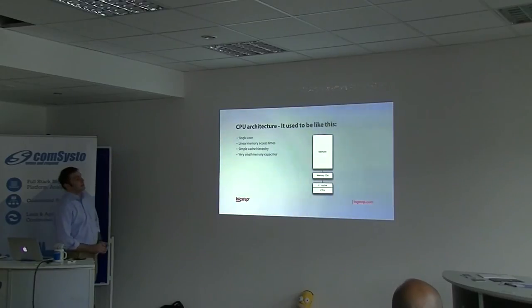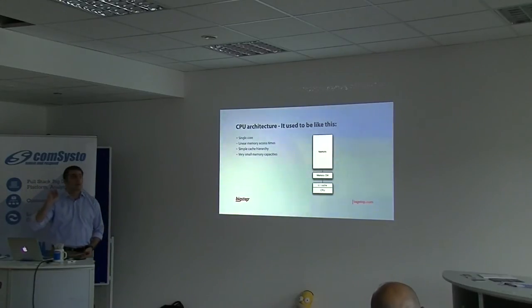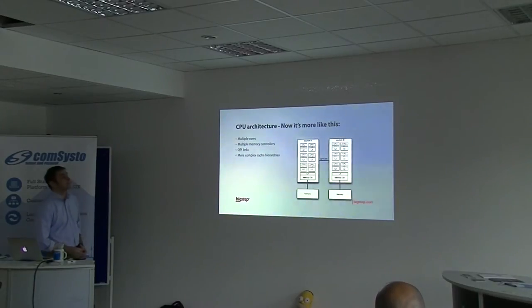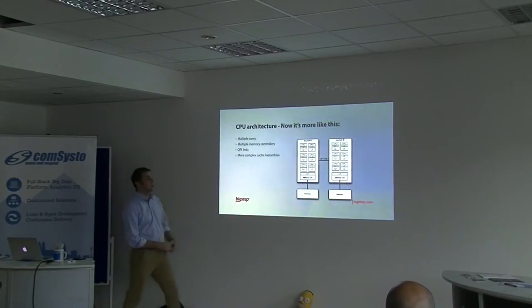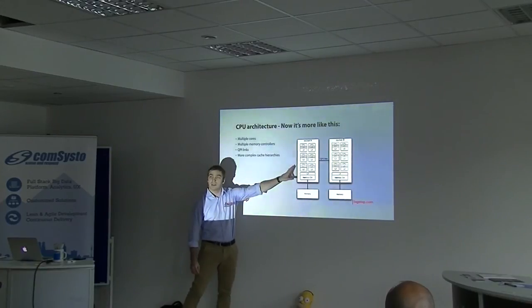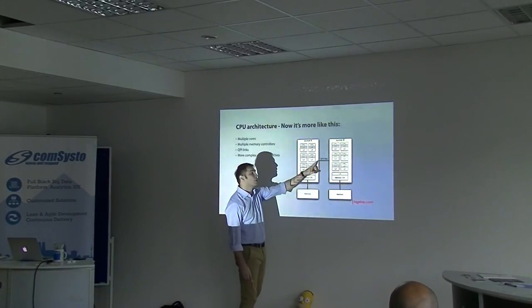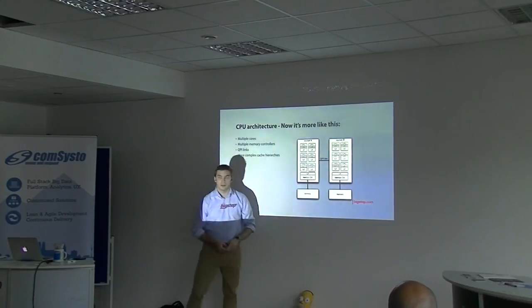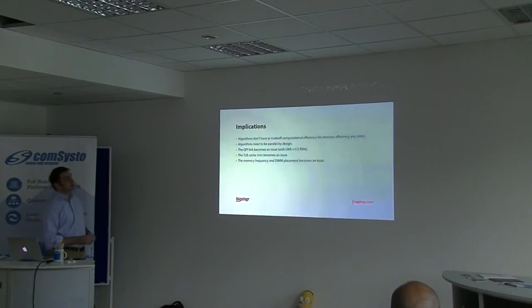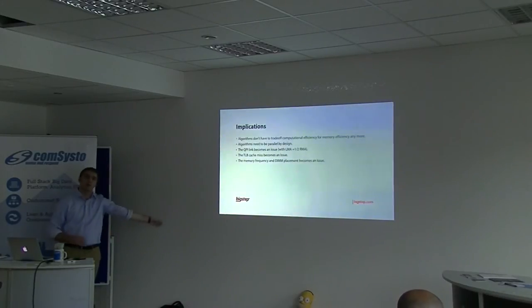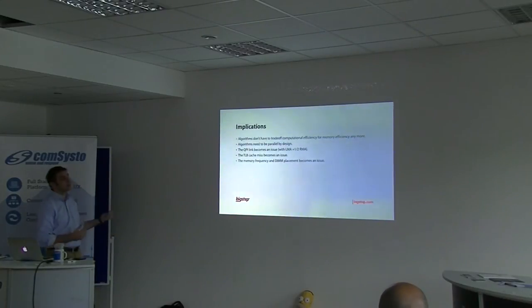People think of memory as simply: you have memory and CPUs, and you put data in memory. But unfortunately it's more like this: you have multiple cores with different caches and a shared cache in each socket, then a connection between the two CPUs called the QPI link, and memory controllers in each CPU — all of which impacts performance. You have to think differently when you design an algorithm for this particular CPU architecture.